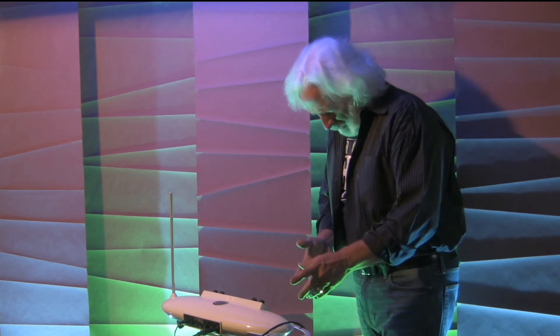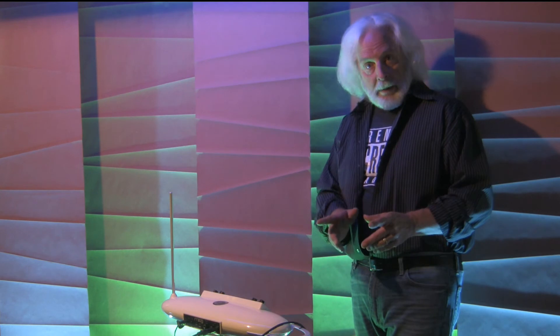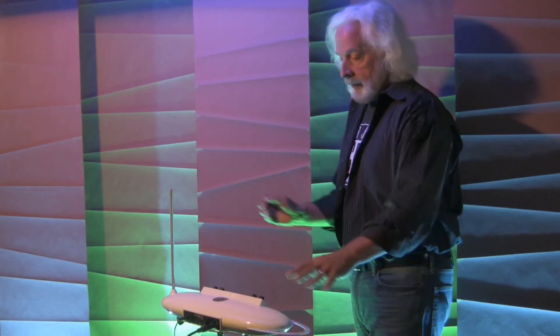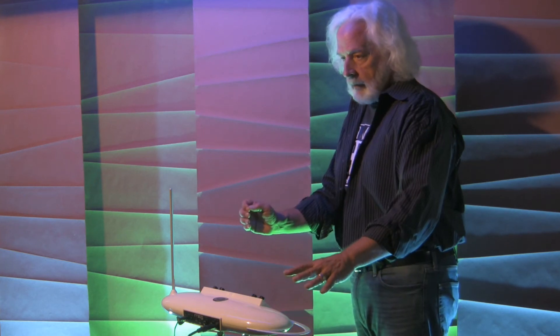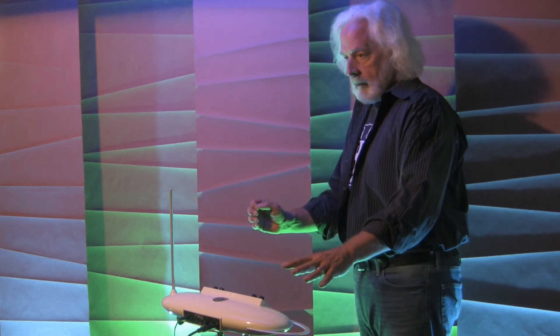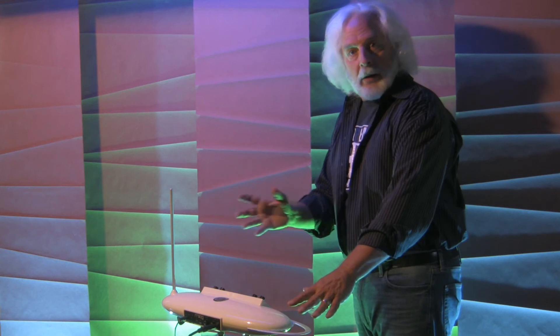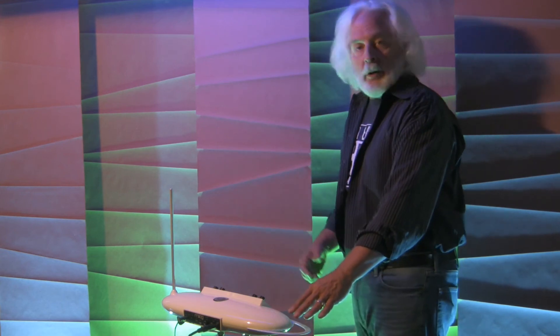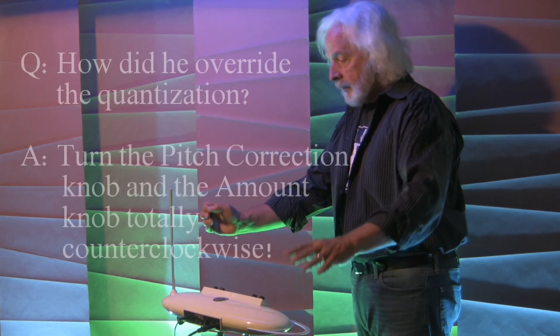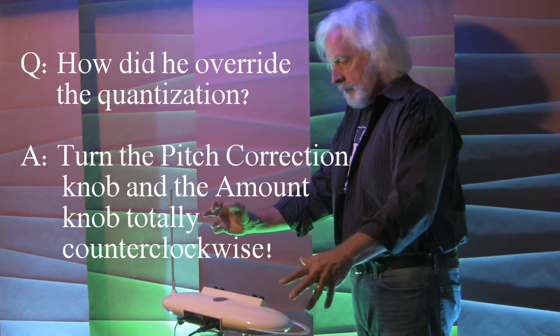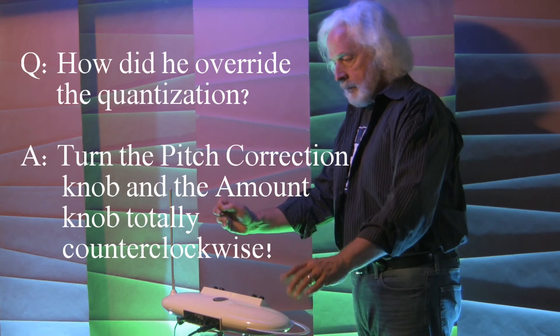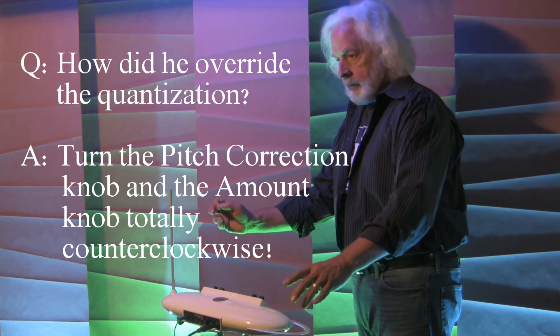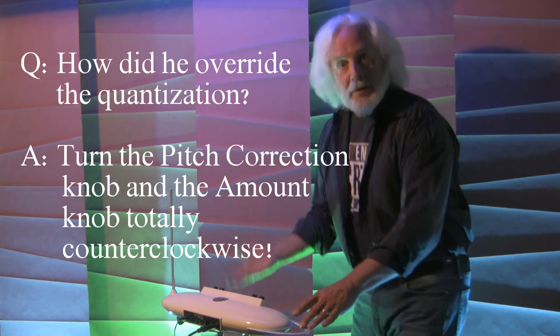The first one is preset number six, ribbons. You can play it just like a regular theremin. Now if you go very slowly, you'll see you can barely hear any quantization at all. And you can play anything you want to. It's as simple as that.